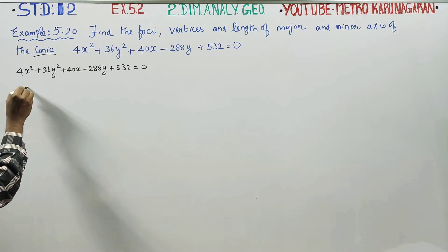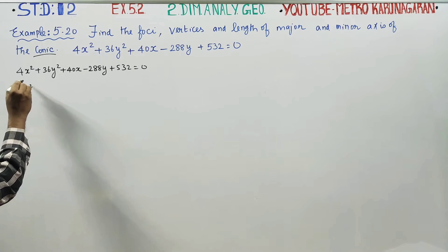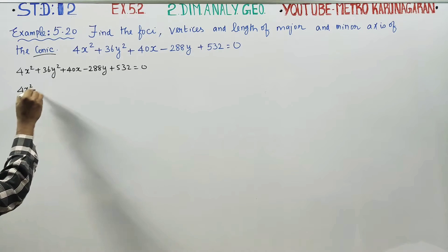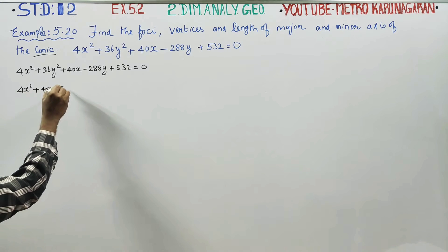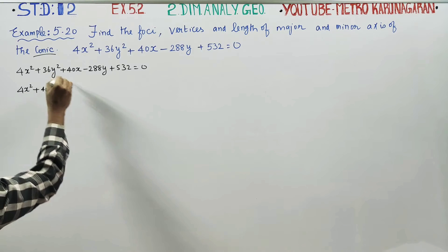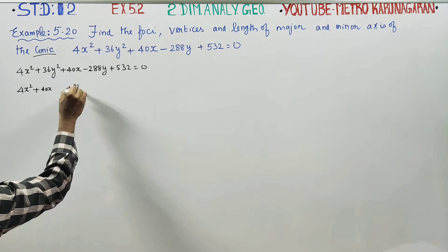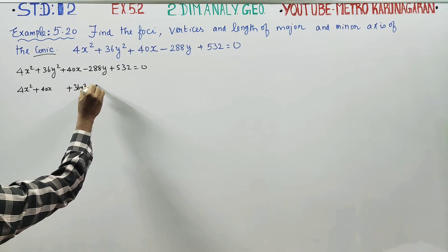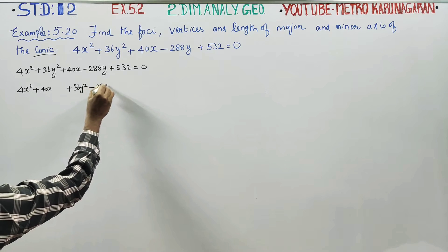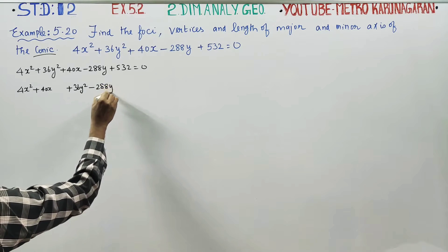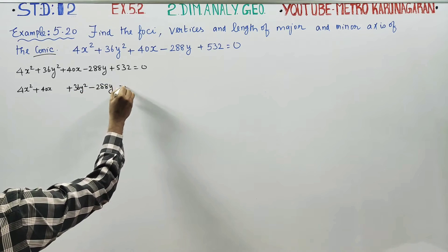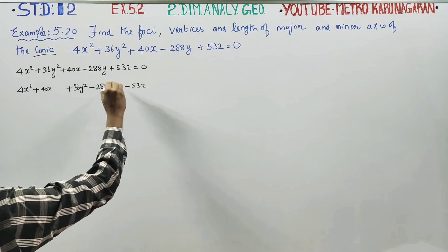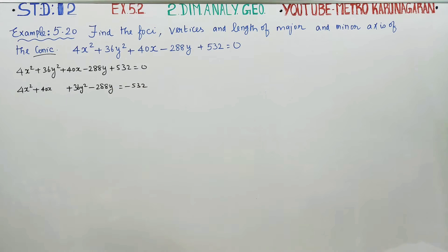We have 4x² related terms with 40x, and 36y² related with −288y, and the constant is −532. We need to group the x-terms and y-terms together to apply the completing the square method.